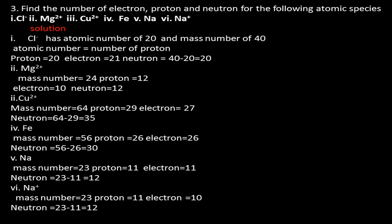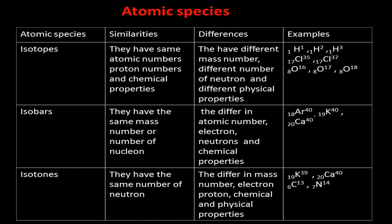Atomic species summary — Isotopes: Similarities: same atomic number (proton number) and same chemical properties. Differences: different mass number, neutron number, and physical properties. Isotopes are atoms having the same atomic number but different mass number; this concept is called isotopy. Examples: hydrogen isotopes — protium (¹H), deuterium (²H), and tritium (³H); also chlorine-35 and chlorine-37; and oxygen-16, oxygen-17, and oxygen-18.